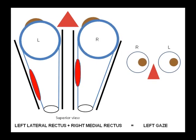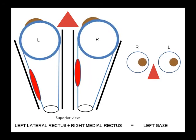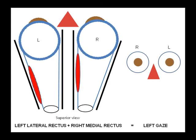Now let's consider how some of the extra-ocular muscles work together to lead to conjugate eye movements. Left gaze occurs entirely within the transverse plane and is mediated by the coordinated activity of the lateral and medial recti. We can see that we have simultaneous contraction of the left lateral rectus and the right medial rectus, leading to leftward gaze. This coordinated activity is coordinated by a pathway within the brainstem known as the medial longitudinal fasciculus.